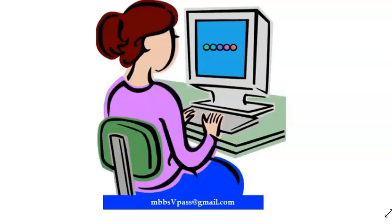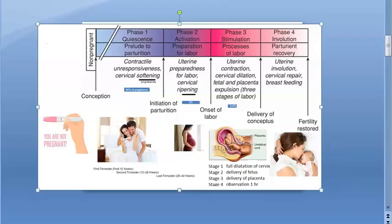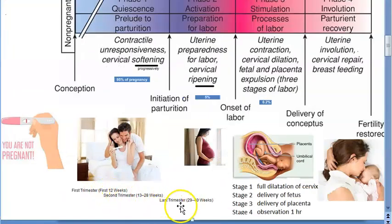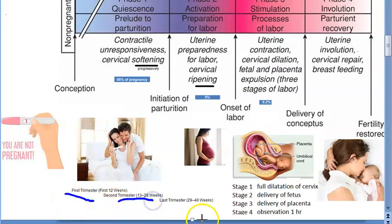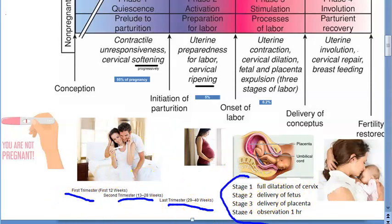One more terminology: first trimester is the first 12 weeks, second trimester is up to 28 weeks, and then the last trimester. We've also updated the stages of labor here — stage one, stage two, stage three, stage four.